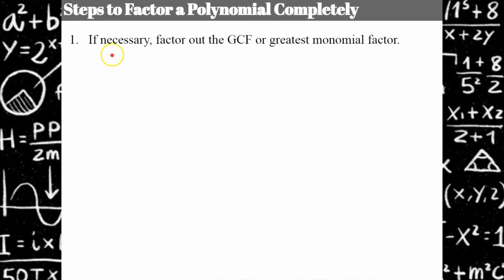To factor a polynomial completely — and this is for any polynomial — step one, if necessary, factor out the greatest monomial factor. You look at all terms and see if they have a greatest common factor in common. If they don't, they don't. But that would be a great first step because that is the one way to ensure that you have completely — this is where the word 'completely' comes into effect — that you've completely factored something.